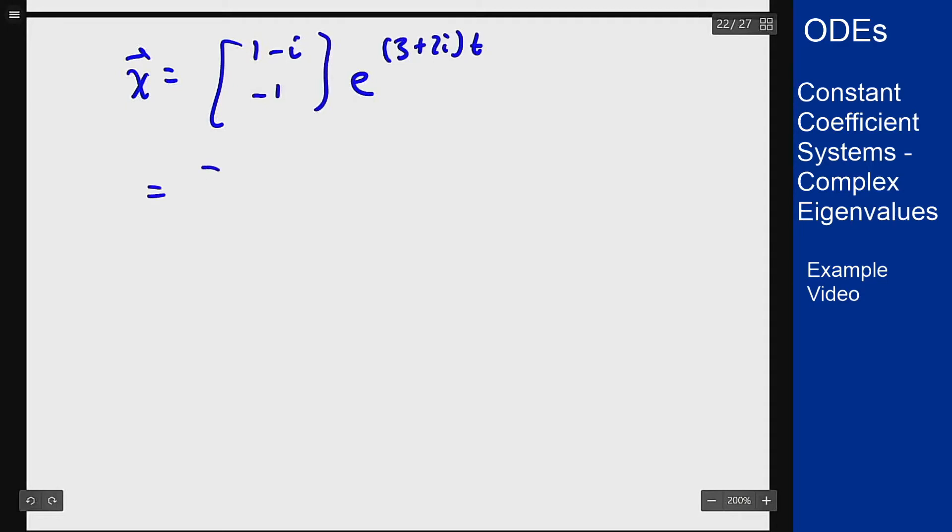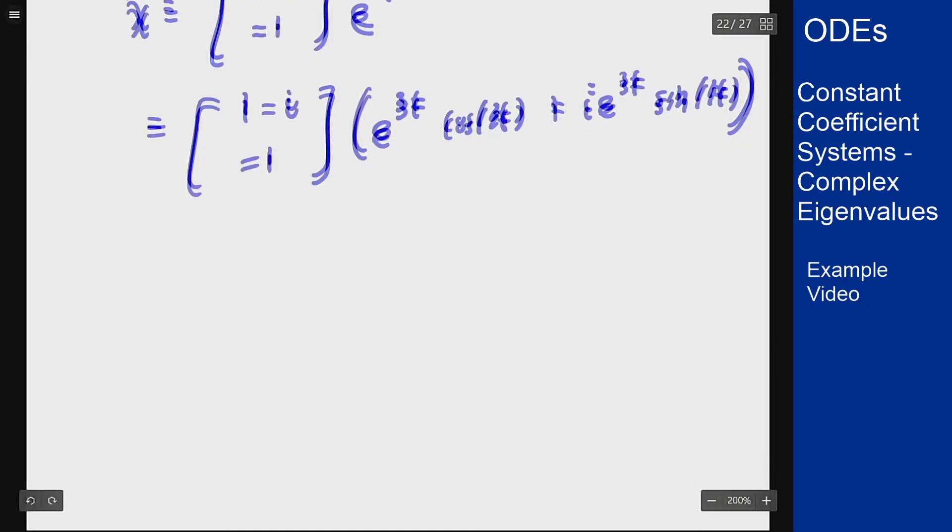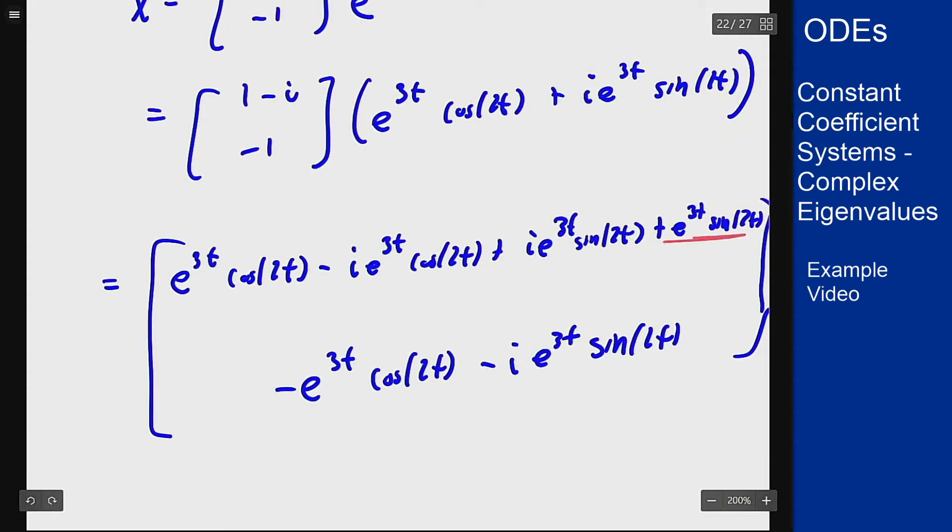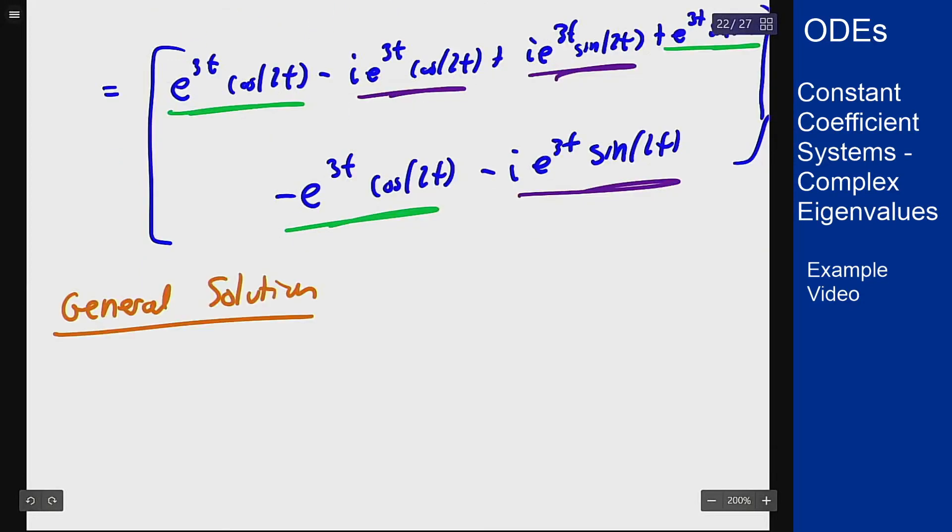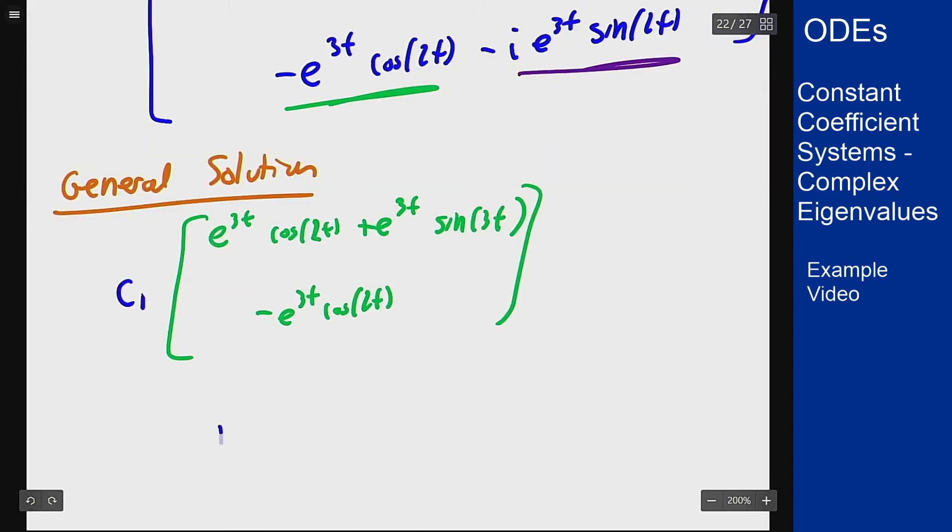We can expand out and distribute that inside the vector solution, using the fact that i times -i is plus 1. Then we can split into the real and imaginary parts because the real part will consist of real terms and the imaginary part is imaginary terms. The general solution is c₁ times the real part (the green term) plus c₂ times the imaginary part.